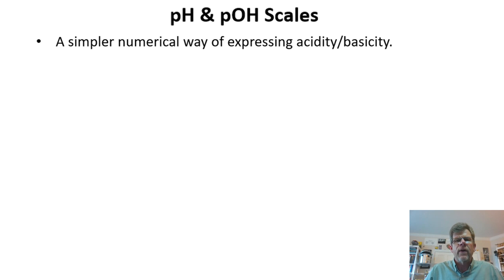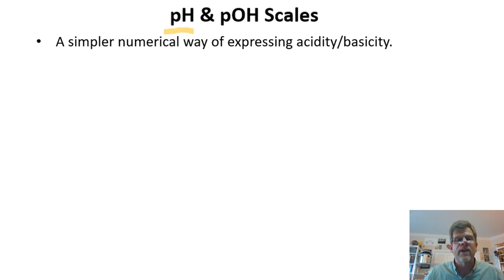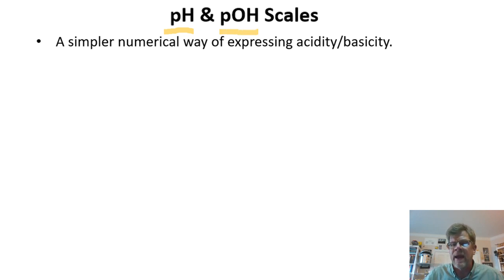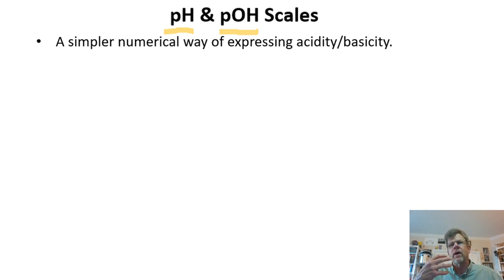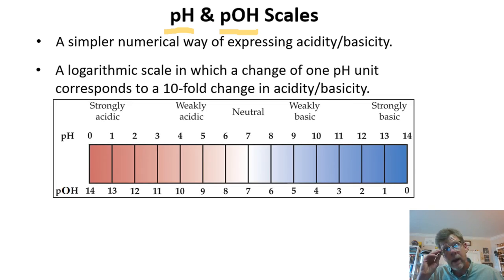The pH scale is a simpler numerical way of expressing acidity or basicity in a solution. Many of us have heard of pH commercially — the pH of your fish tank, the pH of a watershed, and so on. We're also going to look at a very similar reading known as pOH. They're essentially saying the same thing but looking at it from different angles: pH looks at the concentration of hydronium ion in solution, whereas the pOH scale looks at things under the hydroxide ion concentration. The pH scale is logarithmic, where a change of one pH unit corresponds to a tenfold change in acidity or basicity.